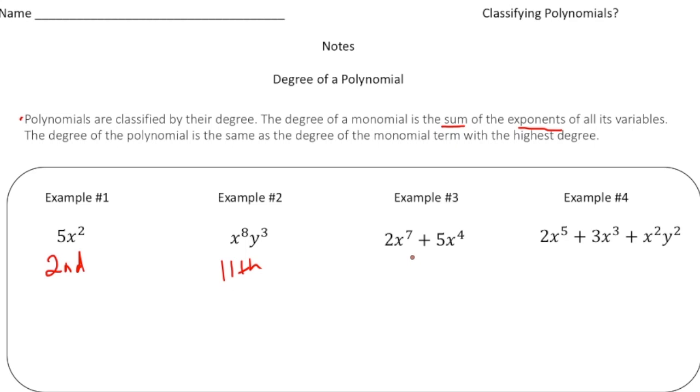Now we have our first binomial for example 3, and then a trinomial for example 4. Now there's a slightly different rule for this one. So it says the degree of a polynomial is the same as the degree of a monomial term with the highest degree.